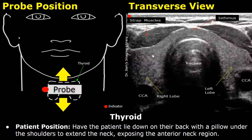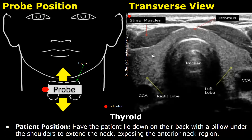On the left side is a schematic diagram showing probe placement on the patient's neck. This dotted region is the location of the thyroid. This white box is the ultrasound probe, and this red dot is the indicator or the orientation marker.